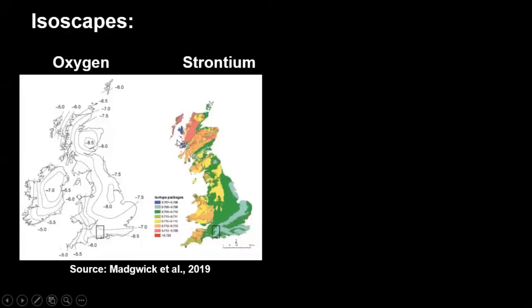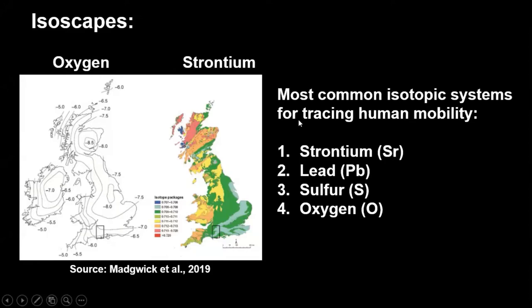Archaeologists spend a lot of time constructing what we call isoscapes, which examines how the isotopes of a particular element vary across a landscape. This is an example showing two different isotopic systems — one for oxygen and one for strontium — and how the isotope ratios of those elements vary across the landscape. People who are eating food in a particular area will be incorporating that local signature of strontium and oxygen into their bones and teeth. In archaeological contexts, the most common isotopic systems we use for tracing human mobility are strontium, and then to a lesser degree, things like lead, sulfur, and oxygen.